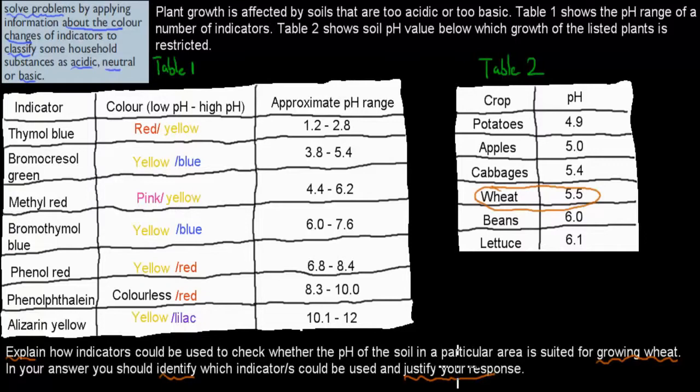So first, give a general statement of why could we use indicators to check if the optimum pH is there, and then say which one of these would we use in that example, and then we have to justify it. So we have to say why we would use it as well. In this case, we want to make sure we have a pH of around about 5.5. We know that these indicators have colors when they have too low pH, they change a certain color, and if they have too high pH, they change a different color. Everything in between are different shades of those colors.